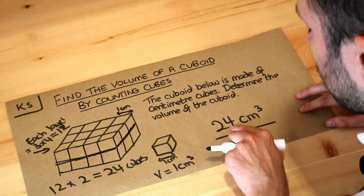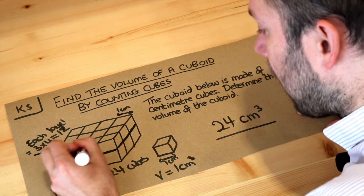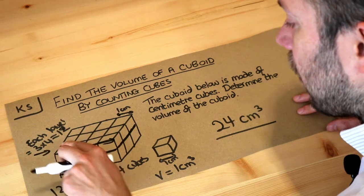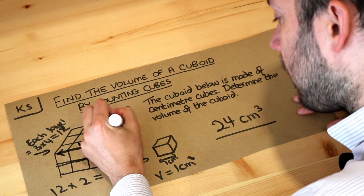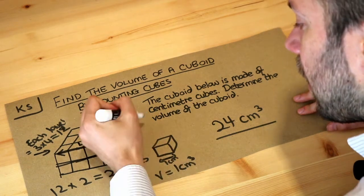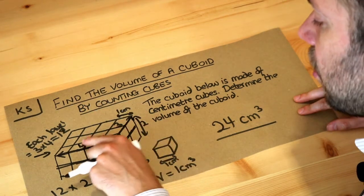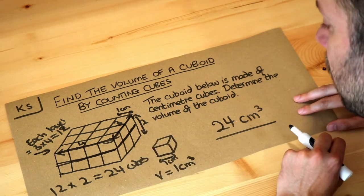You can see that we got that 24 by multiplying the width, which is 4, by the breadth, which is 3, and then multiplying by the height, which is 2. So 4 times 3 times 2 gives you 24.